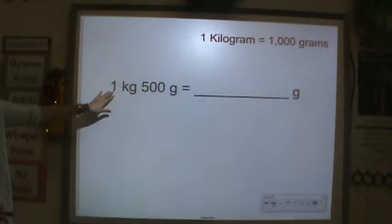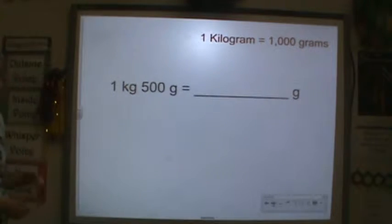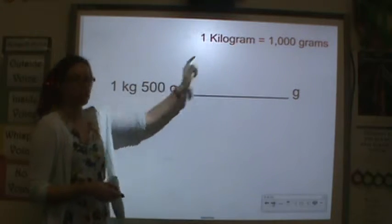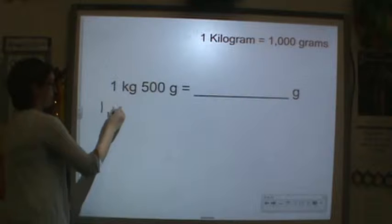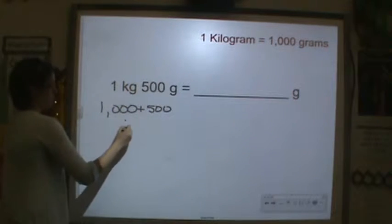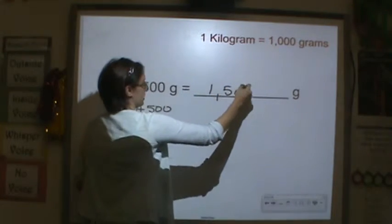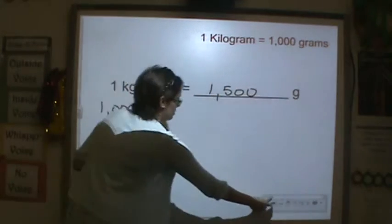So, 1 kilogram and 500 grams. How many total grams is that equal to? I know that 1 kilogram is 1,000 grams. So I have 1,000 plus 500, which is 1,500. So it would be 1,500 grams.